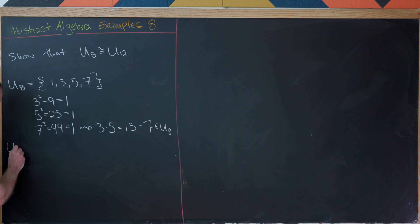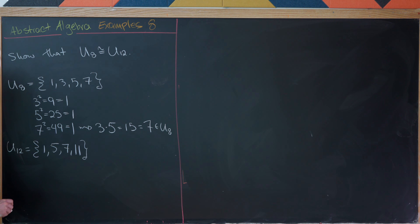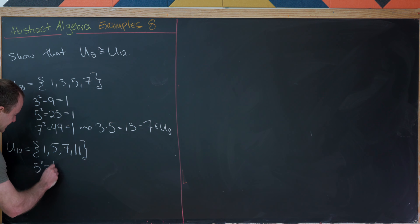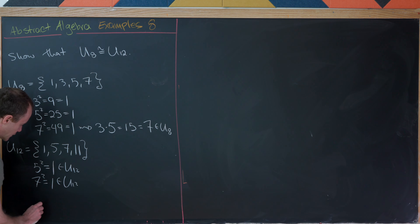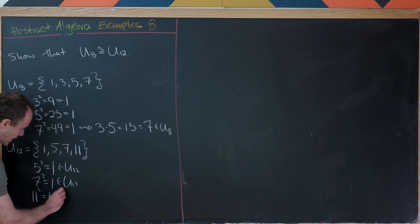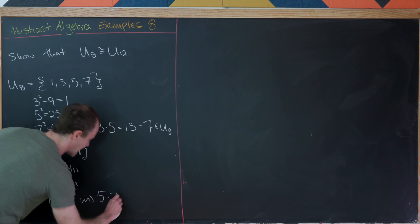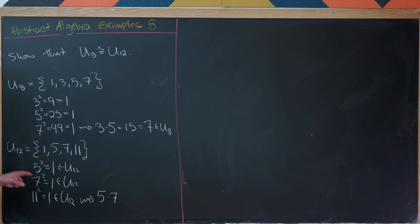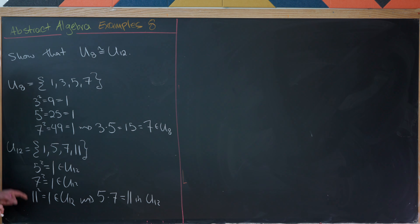Now let's look at U12, which contains 1, 5, 7, and 11. We check that 5²=1, 7²=49=1, and 11²=121=1 in U12. Furthermore, 5×7=35=11 in U12. This gives us a clear idea of what our map should be.